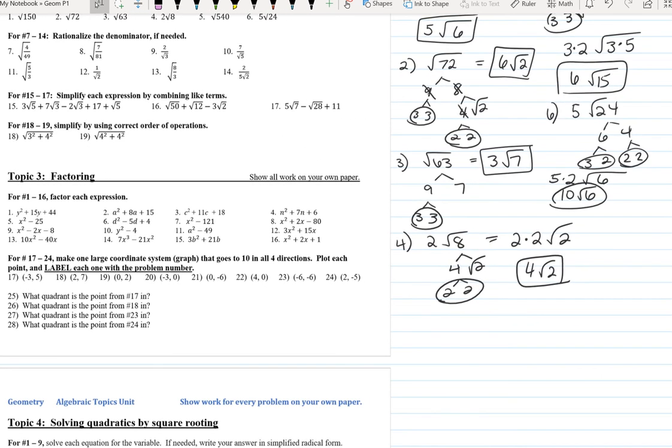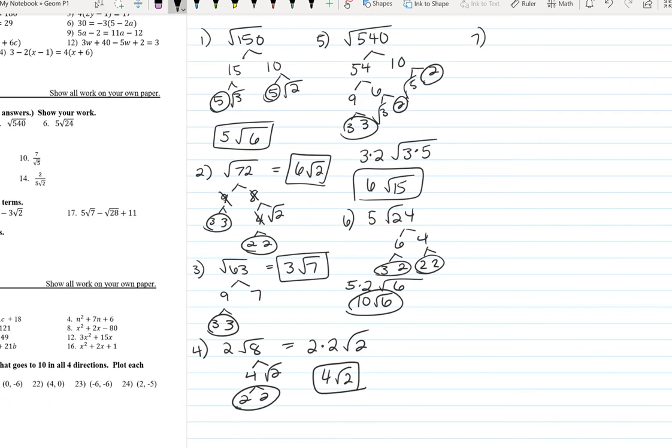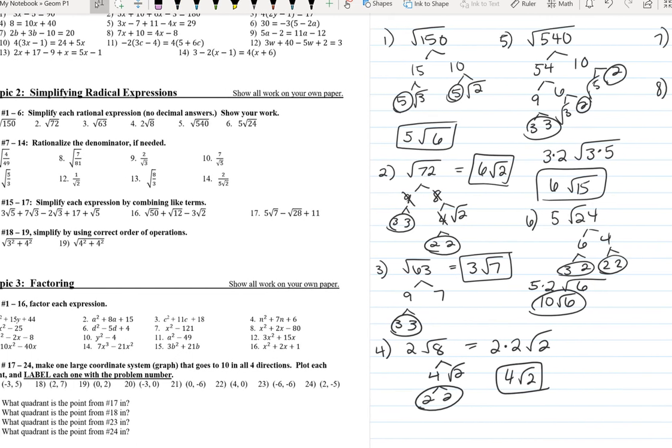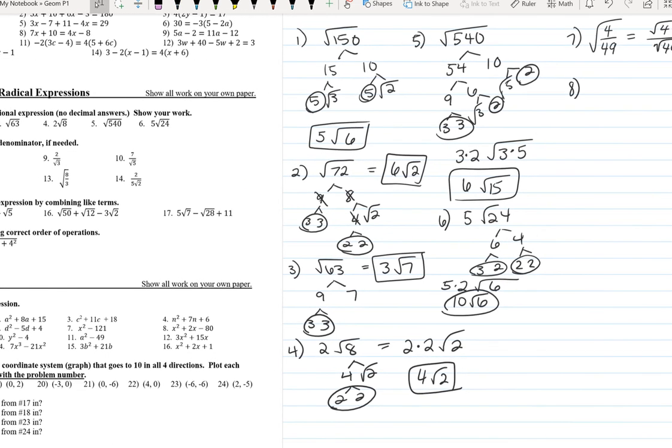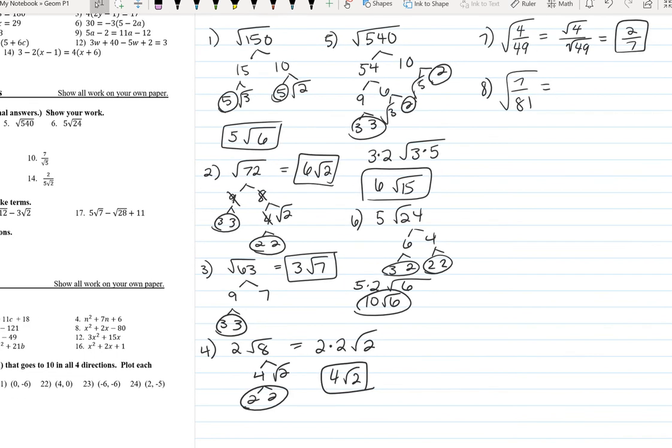Okay. Rationalize the denominator. So square root of 4 over 49. We can separate and take the square root of top and bottom. Square root of 4 is 2. The square root of 49 is 7. So just because they're perfect squares, we were able to rationalize. Square root of 7 over 81. Let's go ahead and separate those. The square root of 81 is 9. So it already gets rationalized.